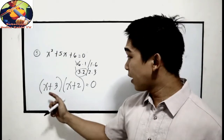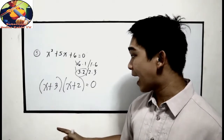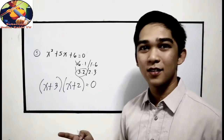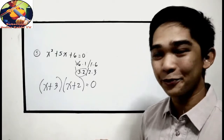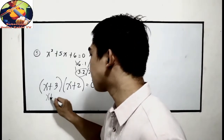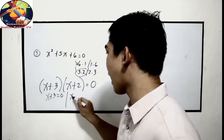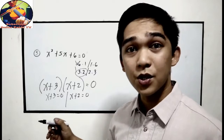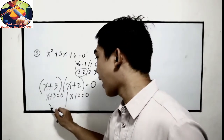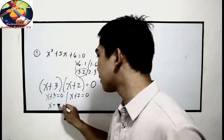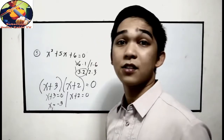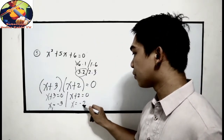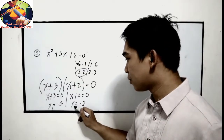It can also be written as x plus 2 times x plus 3, which is the same. Equate to 0: x plus 3 equals 0 and x plus 2 equals 0. Transpose: x equals negative 3, that is x sub 1, and x equals negative 2, that is x sub 2.